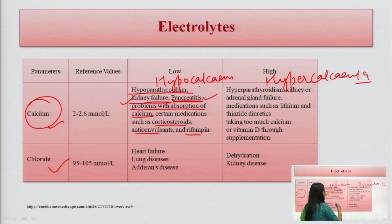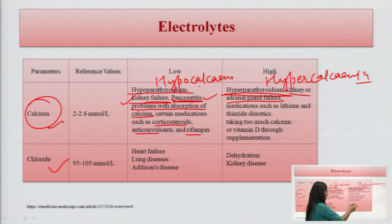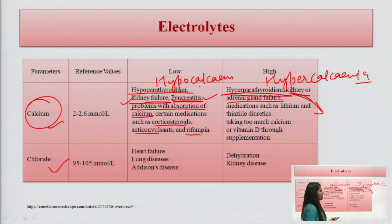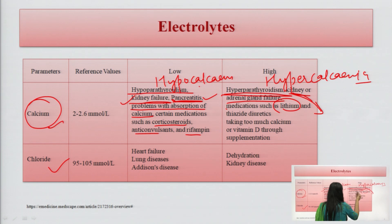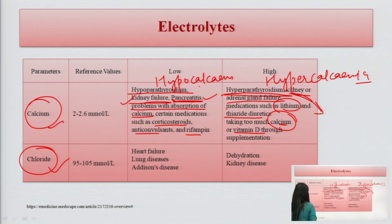For hypercalcemia, hyperparathyroidism can occur, or kidney or adrenal gland failure where the kidney cannot excrete calcium, leading to higher calcium in the blood. Certain drugs like lithium and thiazide diuretics, calcium supplements, or vitamin D supplementation also increase calcium levels. Next is chloride.